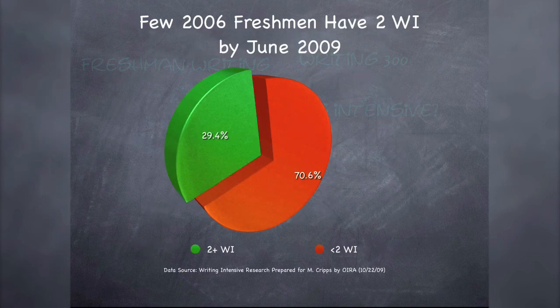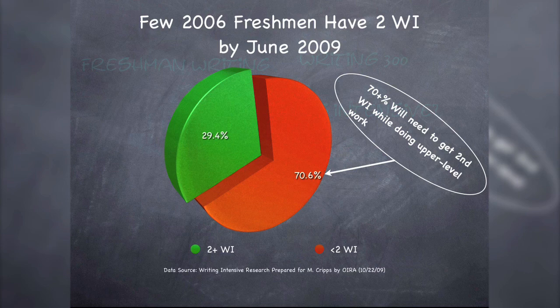But the flip side is that yes, 29.4% of the fall 2006 entering class has two WIs by the end of their sixth term — but that means over 70% of those students still don't have the second WI. Most of those students are probably above 60 credits — potentially even seniors at this point, or going into their senior year. So they're trying to complete upper-level coursework in their fields and finish major requirements. They're likely beyond Writing 300, and yet they still need to pick up this lower-level writing-intensive course. And this is a real challenge.